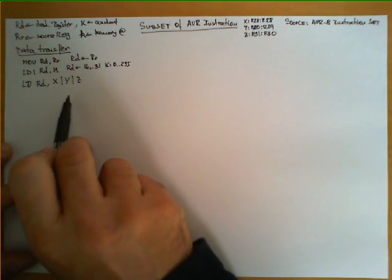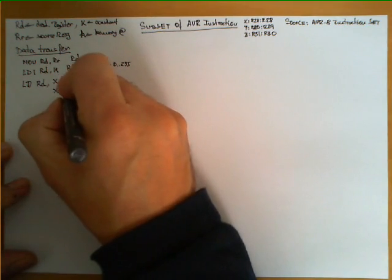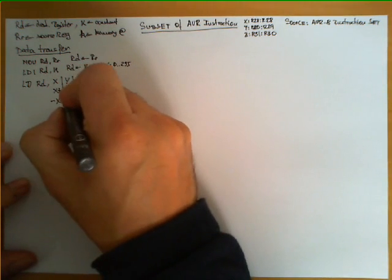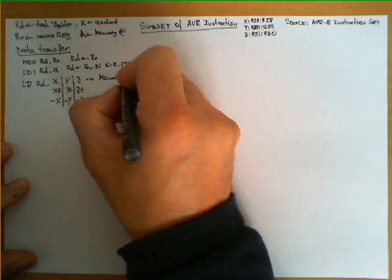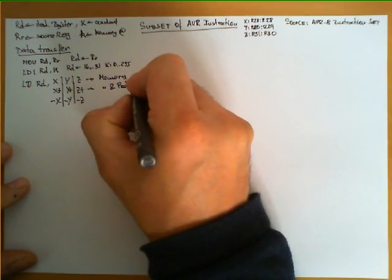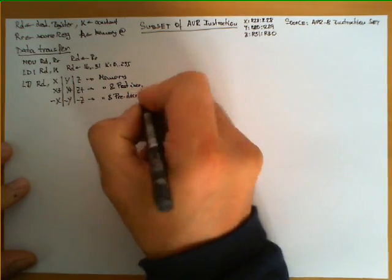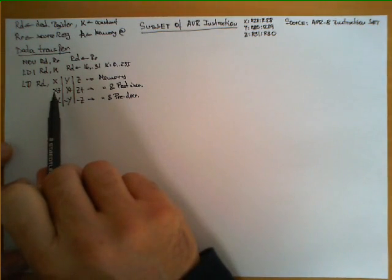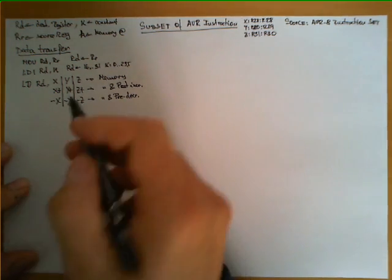LD allows us to use these three 16-bit registers as memory addresses to load data into RD. There are also two powerful variants: LD with X+, Y+, or Z+ performs a post-increment of the register after accessing memory. The variant with -X, -Y, or -Z pre-decrements the register before accessing memory. This is very useful when accessing consecutive memory positions.